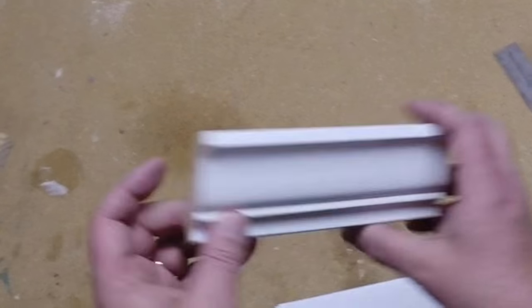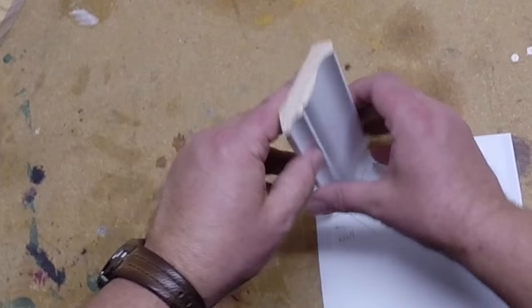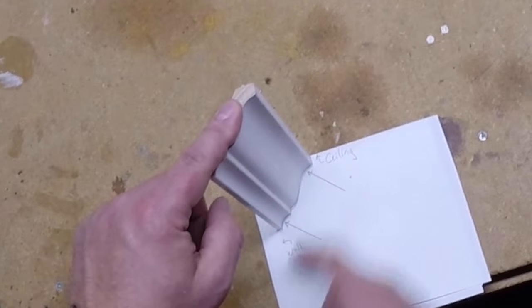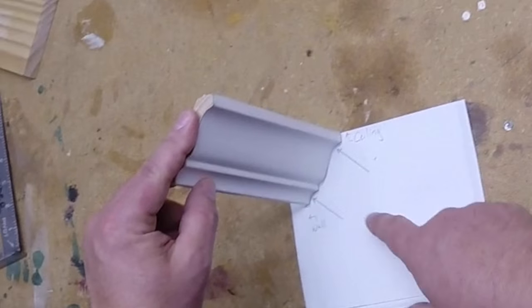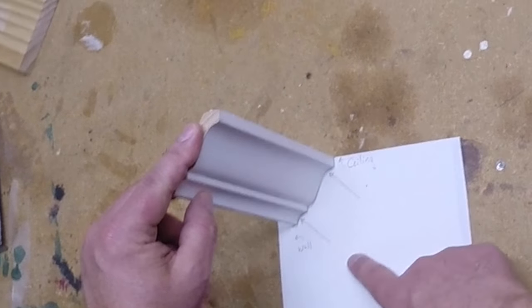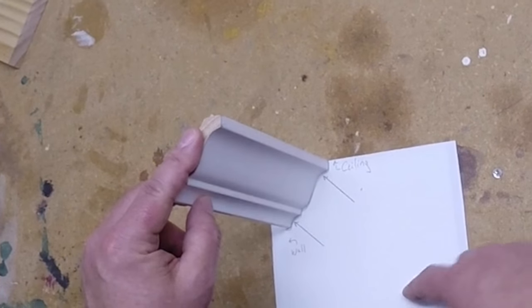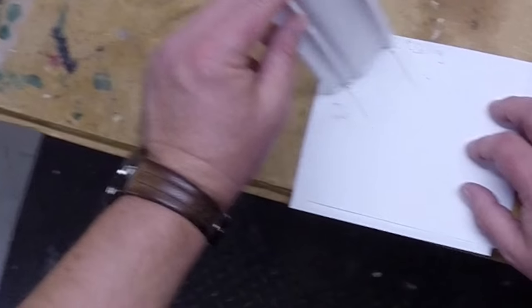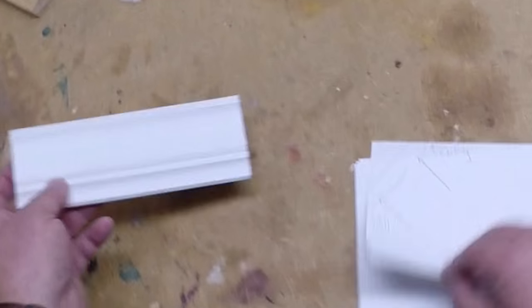Crown molding you probably are used to seeing installed like this between the wall and the ceiling. When you do that, you have two places to drive a nail: one into the ceiling and one into the wall. You find the studs, drive your nails, and the thing stays up. After you caulk it, the caulk holds it mostly. That's one way traditionally.